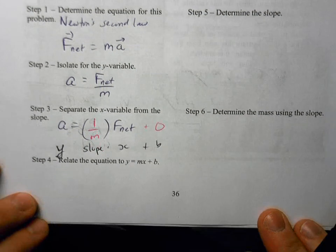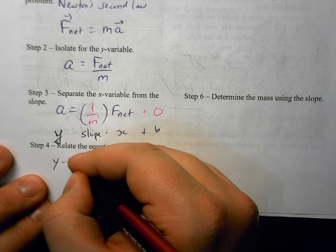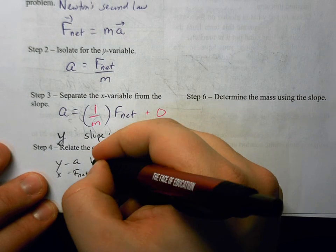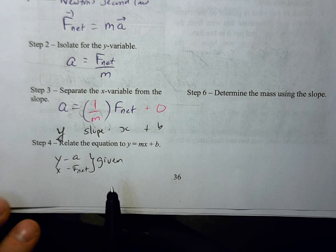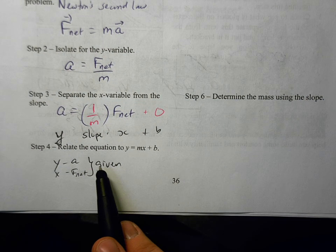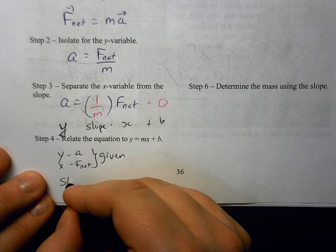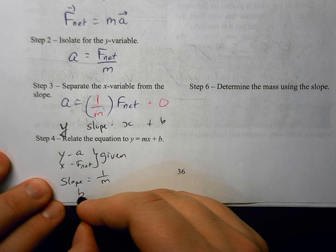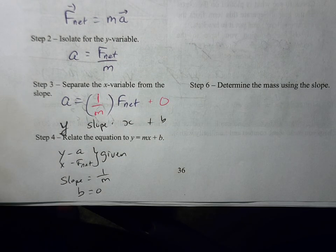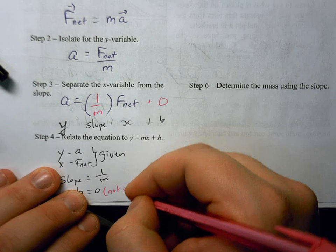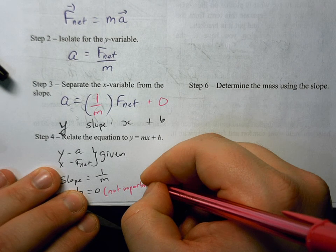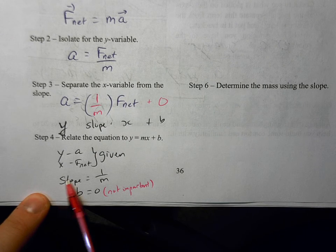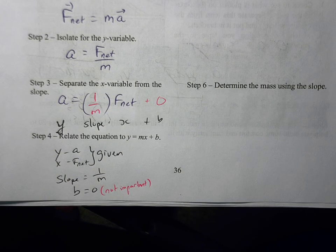What we can do is relate that equation. We know that the y variable is the acceleration and x is the net force. This is given already from the graph. What we're told in this graph is the slope is going to be equal to one over the mass. And then we're also told that the y-intercept is zero. That's great. I'm just going to say this is not important. I don't mean that it's not important, it's just we don't need it to do the rest of the question. What we know though is that the slope is equal to one divided by the mass.